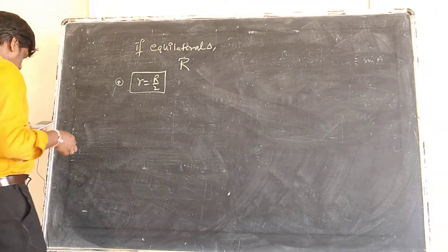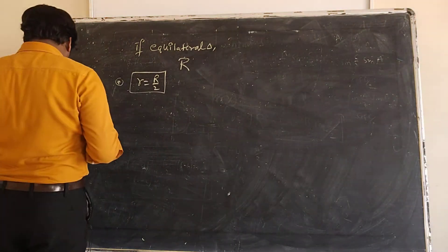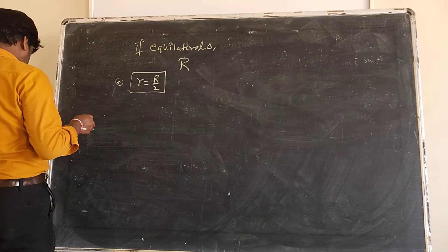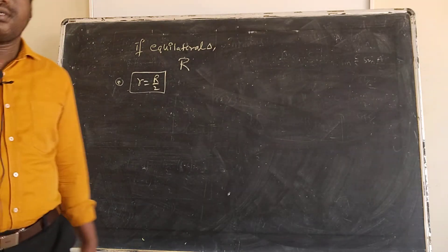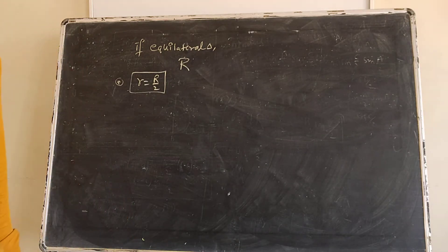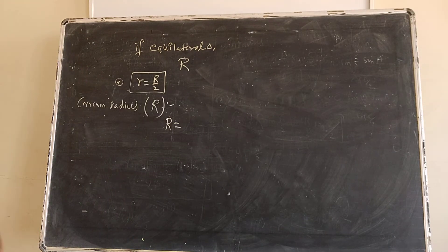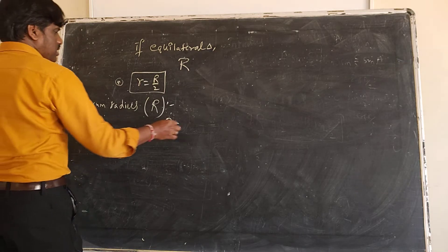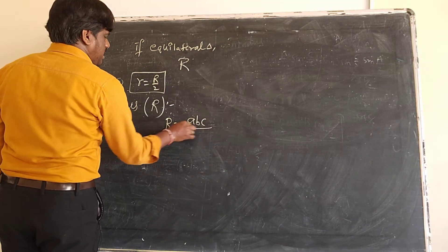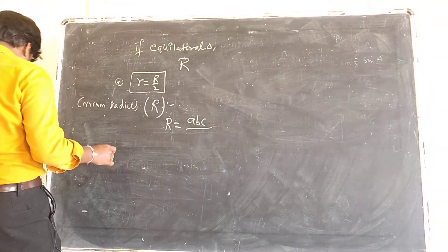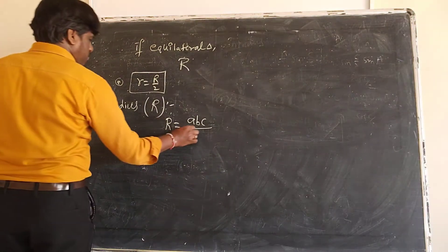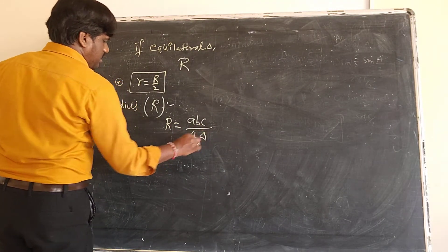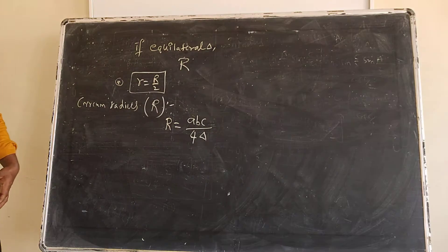Let us discuss the circumradius formula. The circumradius R is equal to ABC divided by 4 times the area (4Δ). This is the circumradius formula.